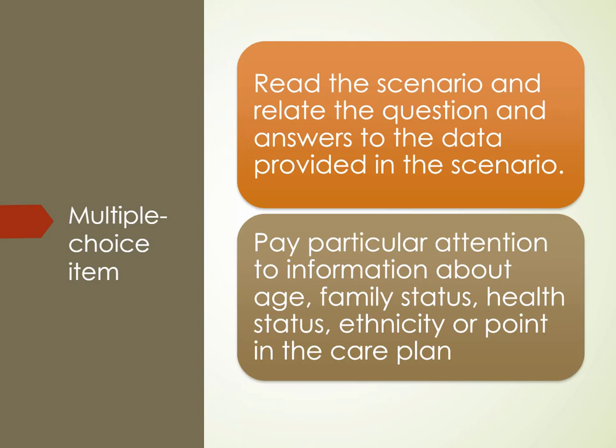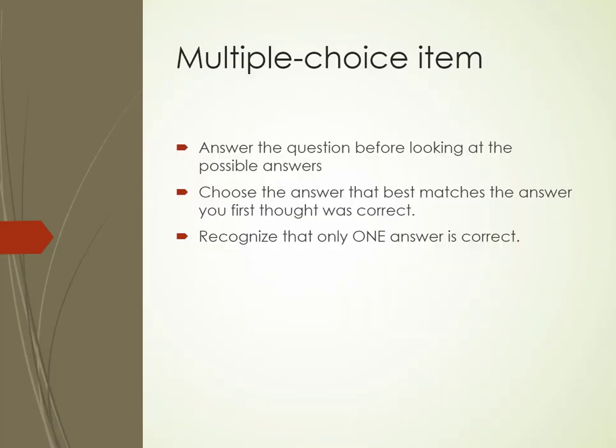Pay close attention to details like the patient's age, family status — for example, whether the patient just lost a partner — health status, ethnicity, and point in the care plan. These details give you a heads-up on what the question is looking for. When you're down to two answers, choose the best one by asking: which option would benefit the patient more, or which option cannot harm or kill the patient?